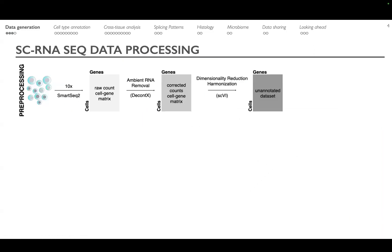Data analysis starts once we have data coming out of the sequencer. We have a collection of files, we align them to the human reference genome, and get a cell-by-genes matrix. In the human samples we realized there was a lot of contamination from ambient RNA — potentially due to the downtime of donors or travel time from hospital to lab. We employ CellBender to computationally remove the contribution of ambient RNA and obtain a matrix of corrected counts.